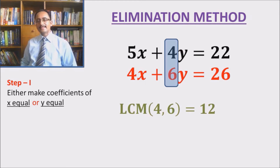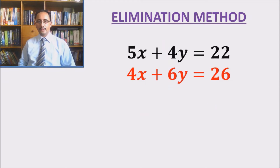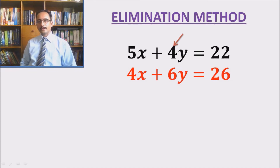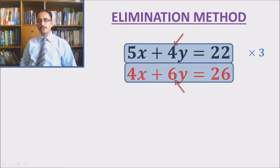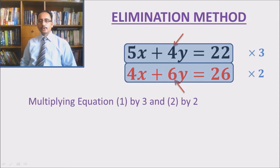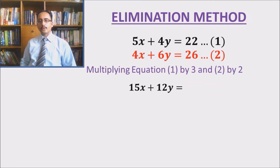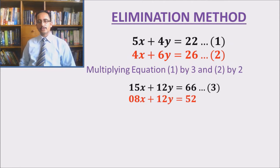The LCM of 4 and 6 is 12. So in the first equation I will make this 4 equal to 12, and in order to do that I have to multiply the whole equation by 3. Similarly, in the second equation, in order to make this 6 equal to 12, the whole equation needs to be multiplied by 2. So multiplying the first equation by 3 and the second equation by 2, we get: 15x plus 12y equals to 66 and 8x plus 12y equals to 52.